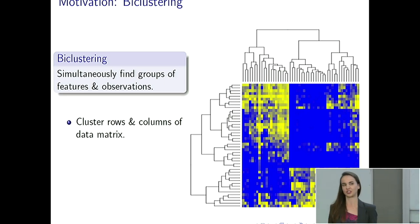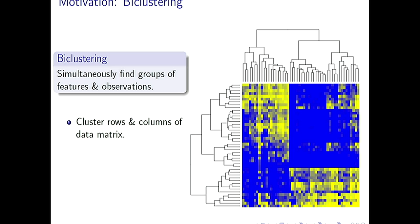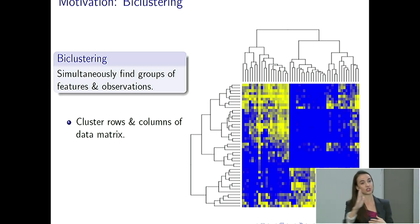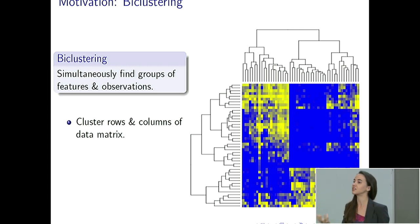I mentioned the term bi-clustering. Bi-clustering just means two clustering — finding groups in both observation space and feature space simultaneously. Take a simple example where we have patients and we have measured genomic profiles on those patients. We want to group those patients to see which are similar to each other, and at the same time understand the genetic basis for that similarity. So we're grouping patients or observations, and we're grouping features or variables, which are the genes.